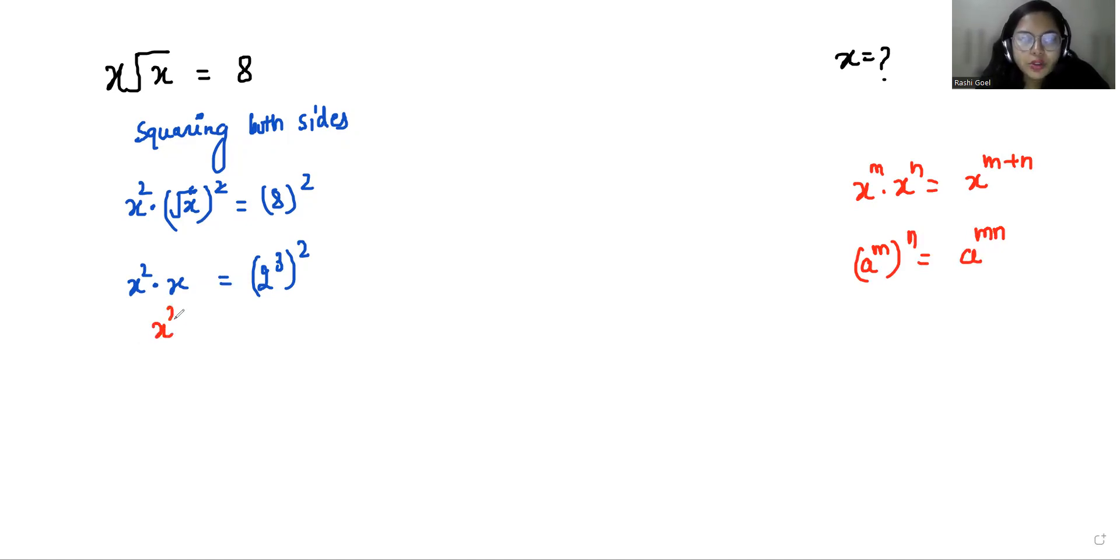So it becomes x to the power 2 plus 1, and here it becomes 2 to the power 6. So x to the power 3 equals 2 to the power 6.